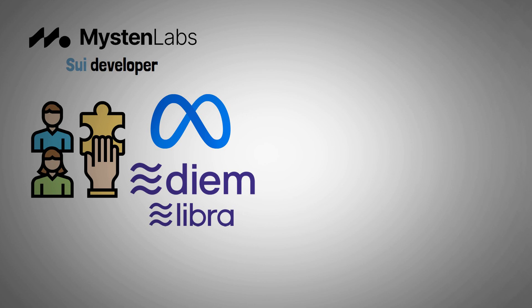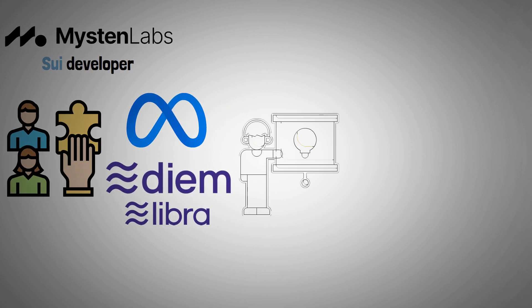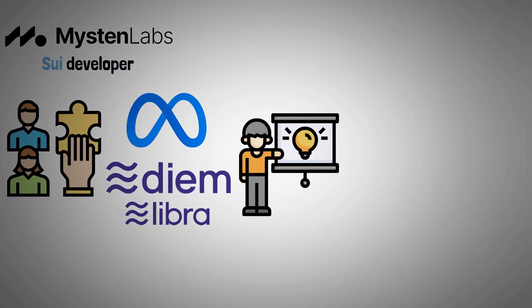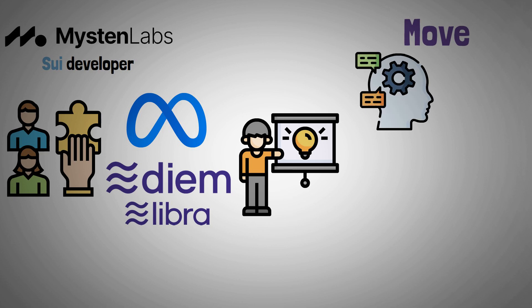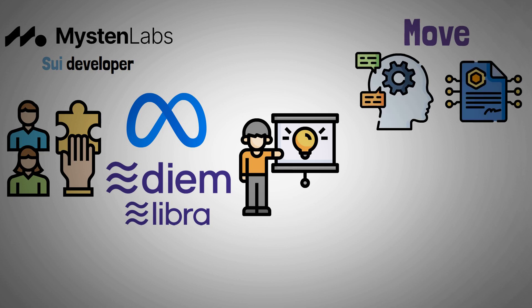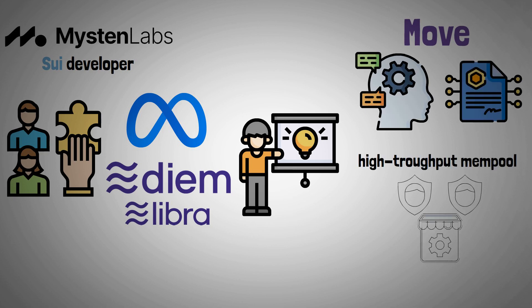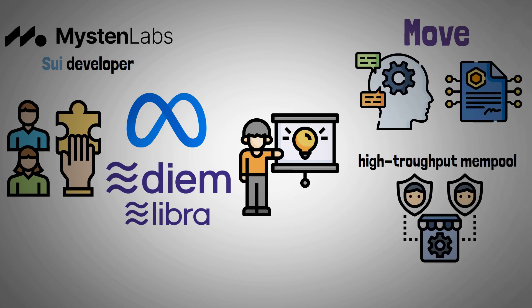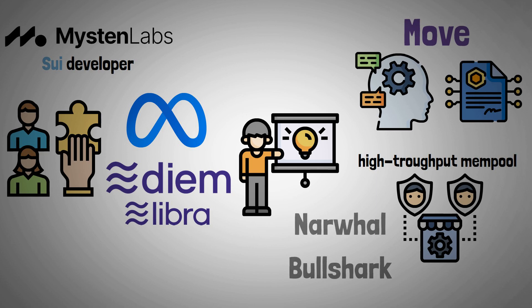They created new technologies as part of that work, including Move, a new programming language for smart contracts, and the high-throughput mempool with consensus engines known as Narwhal and Bullshark.